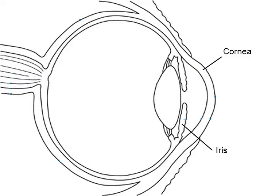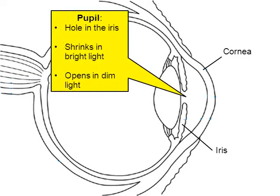There's the part labeled the iris. The next part I want to mention is in the middle of the iris — there's a hole. The hole in the middle of the iris is called the pupil. As the iris stretches and contracts, because the iris is a muscle, this hole gets bigger or smaller. The hole will shrink in bright light and will be larger and open in dim light.